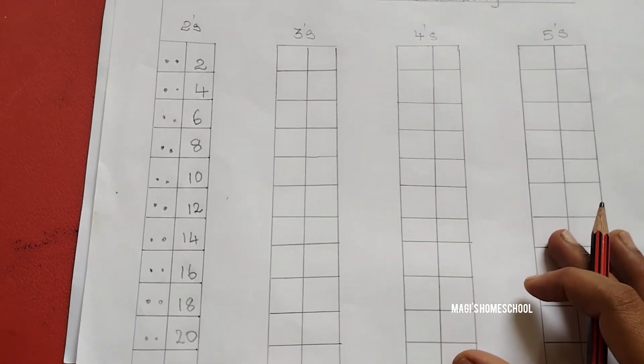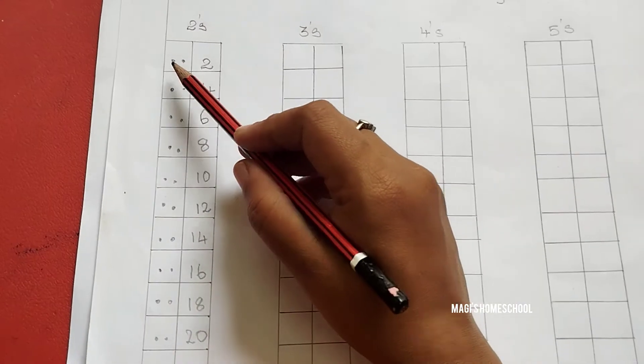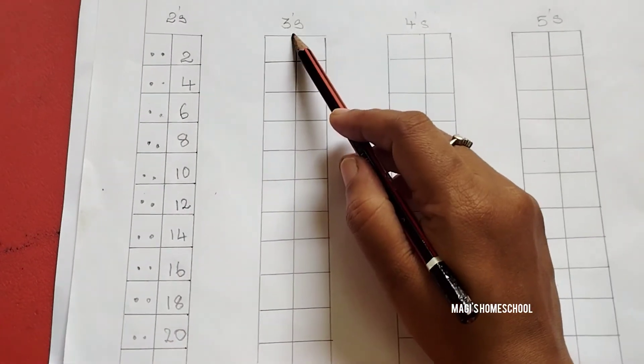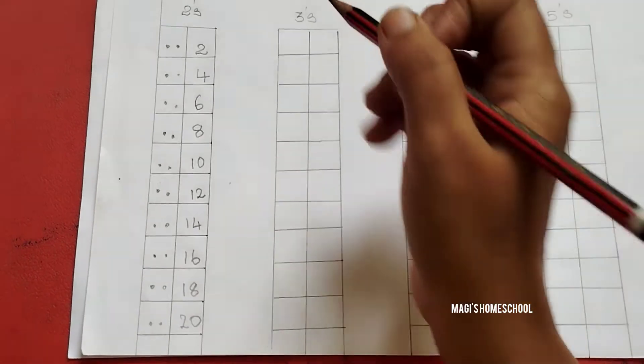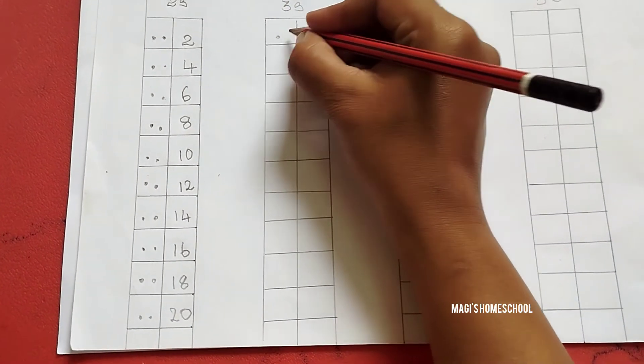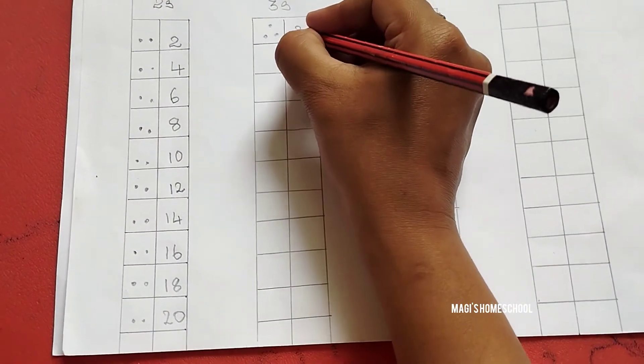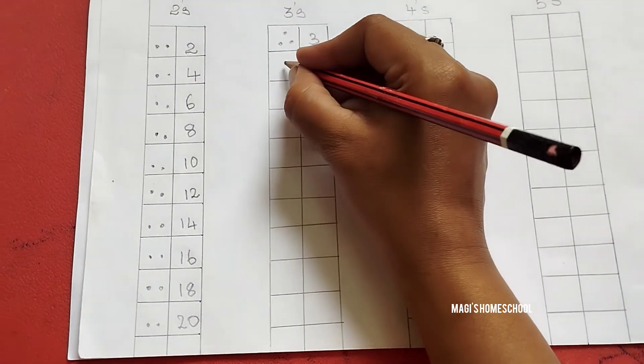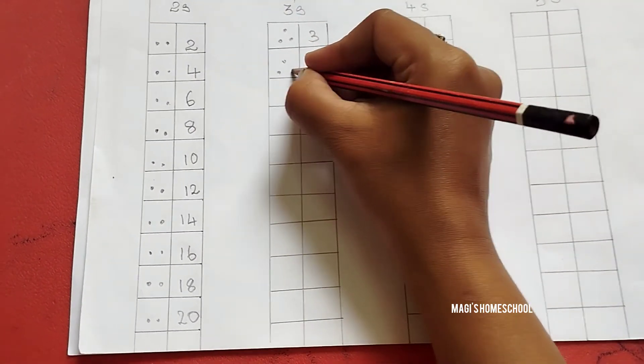Now let's see skip counting by 3. For skip counting by 3, you are going to add 3 dots in the previous column and add the number. 1, 2, 3. Now start with number 3. After 3, 4, 5, 6.